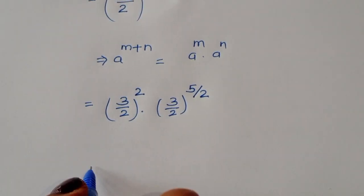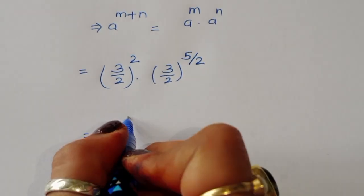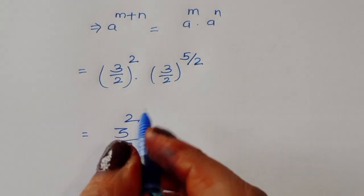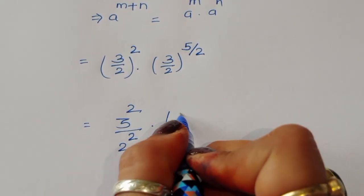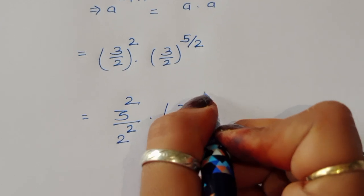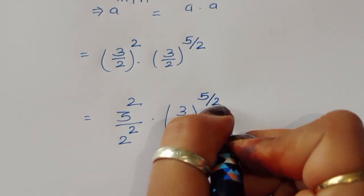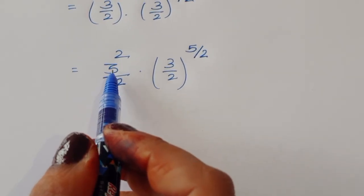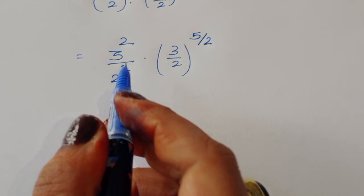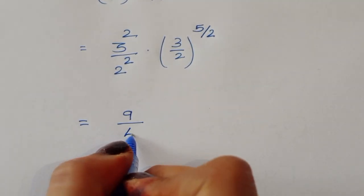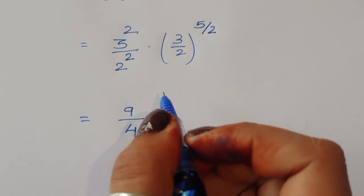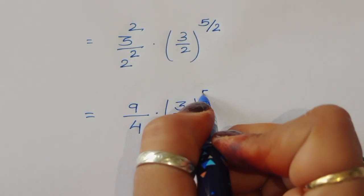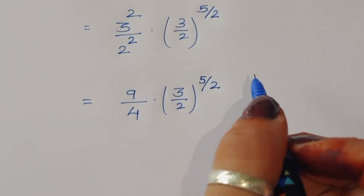Now (3/2)^2 — we are separating the power here — times (3/2)^(5/2). So 3 power 2 is 9, divided by 2 power 2 is 4. We get 9 upon 4 times 9 upon 4 times (3/2)^(5/2).